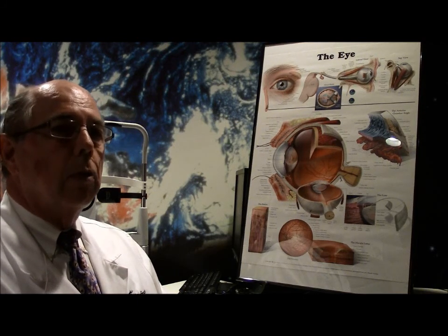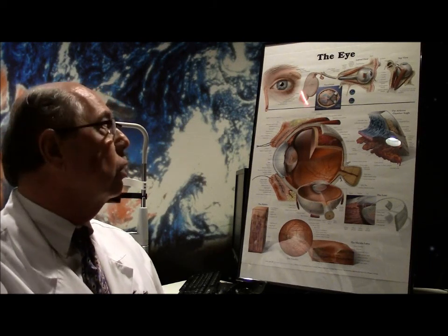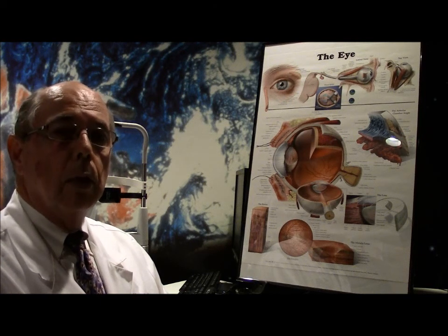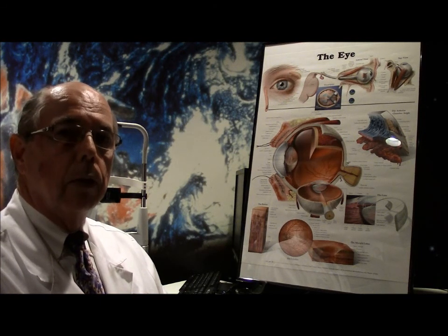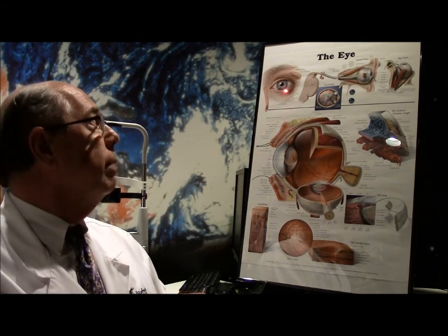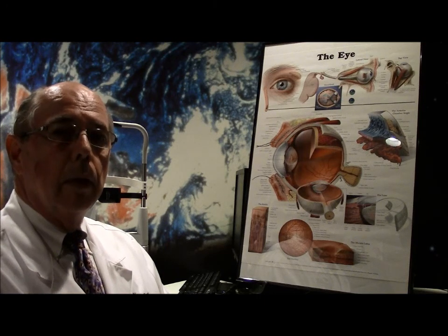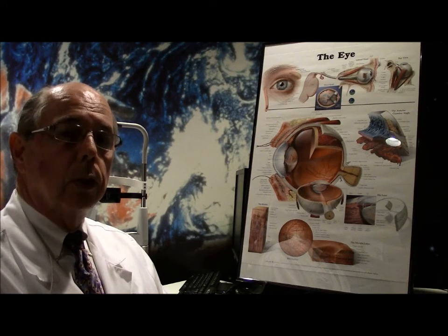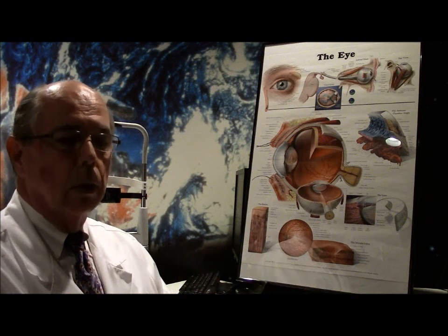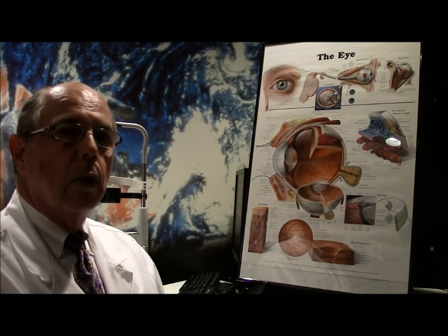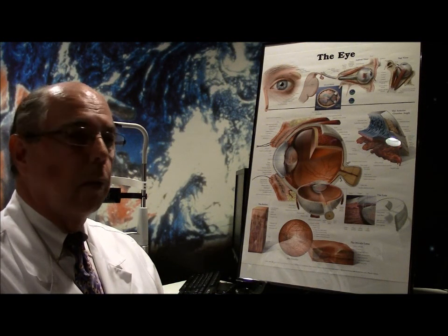The first thing we do when we have a suspicious lesion on the lower lid is take a small biopsy to make sure it's a skin cancer before we proceed with removal. Because if it turned out to be benign we would do very minimal treatment to that area and that would be the end of it. But if it comes out that it's a basal cell carcinoma or a squamous cell carcinoma, then we have to go through further steps to cure the problem.